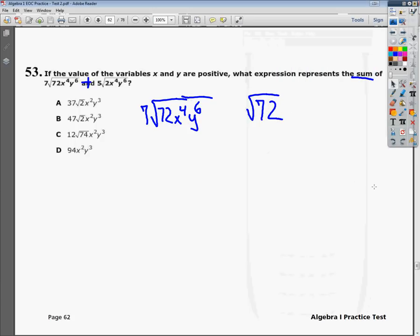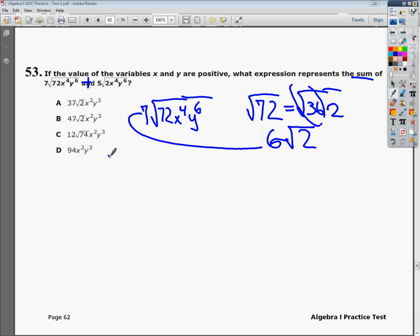That's important. What that means is 72 can be rewritten as 2 times 36, and for this problem, that's very helpful. So 72 is really the same thing as the square root of 36 times 2. I know that the square root of 36 is 6, so I multiply that times the square root of 2, which is 6 times the square root of 2. That's going to go times the 7 here. 6 times 7 is 42, so I can rewrite the number part as 42 times the square root of 2.